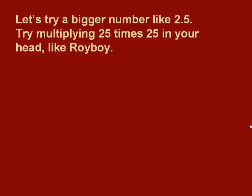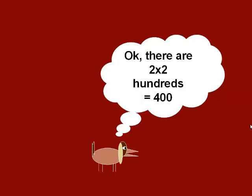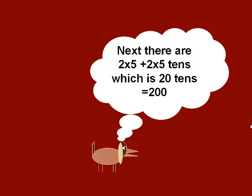Let's try multiplying 25 times 25 in your head, like Roy Boyd does here. So there are 2 times 2 hundreds, which gives us 400. Next, we do the cross-multiplying. There's 2 times 5 plus 2 times 5 tens, which is 10 plus 10, or 20 tens, which is 200.